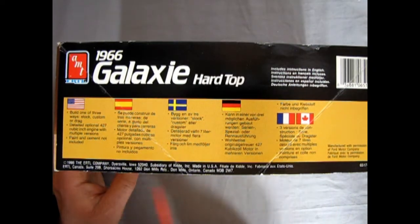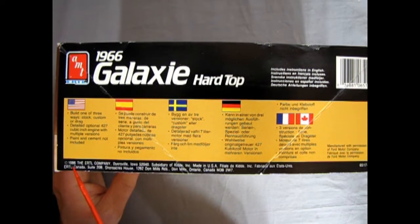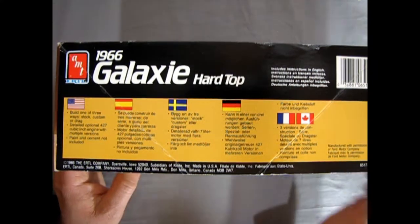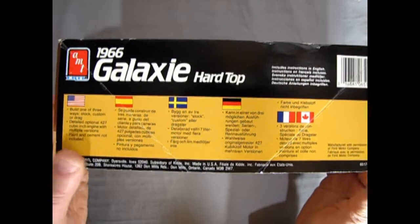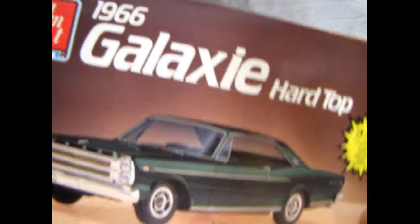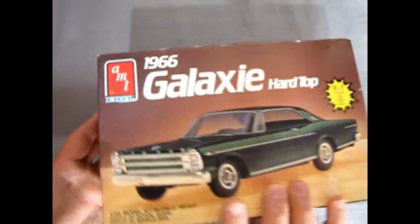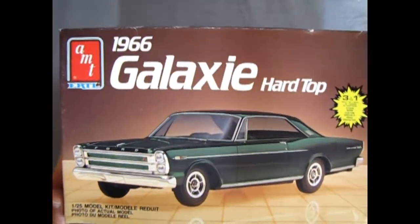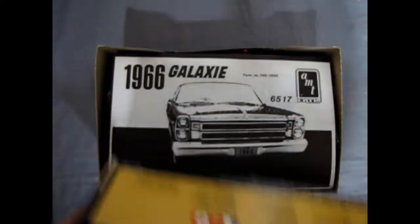Is there a date on this thing? 1986, the AMT Ertl Company, so this is an old one. This includes instructions in English and has a barcode - the barcode was kind of new back then. Now let's open up the lid on this nice machine and see what is inside it.